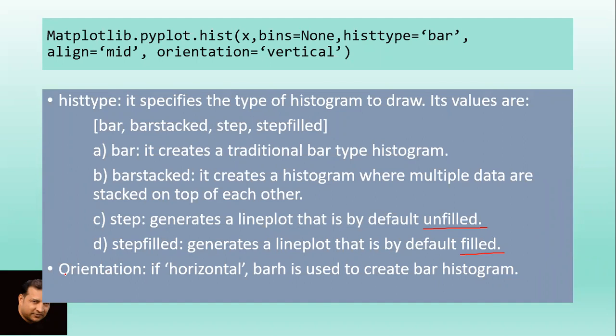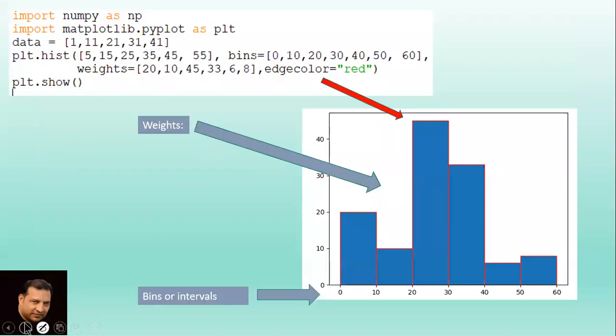Stepfilled generates a line plot that is by default filled. Orientation: if horizontal, barh is used to create bar histogram. Otherwise vertical is default.